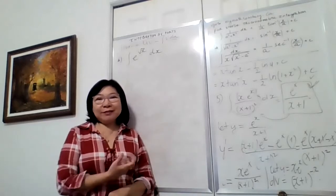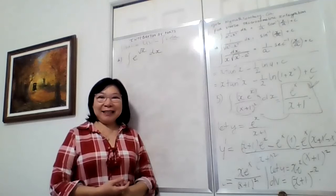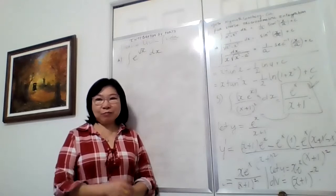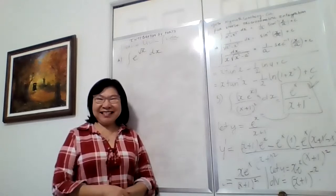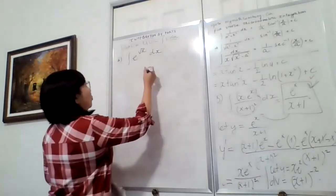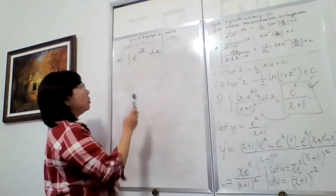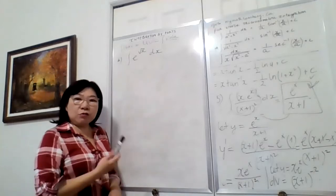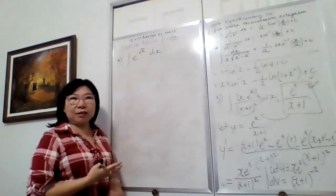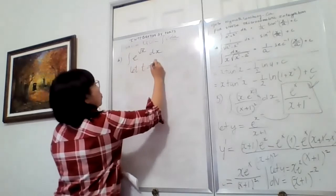The more I show you, the better you see the pattern. Now in this last question, you might question me: we only have one function, so why do we bother using integration by parts? You will see — because we have a square root on the x on top, it's a little bit complicated. So I'm going to use substitution first. Let t equal the square root of x.